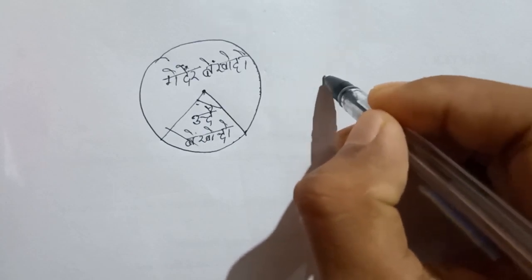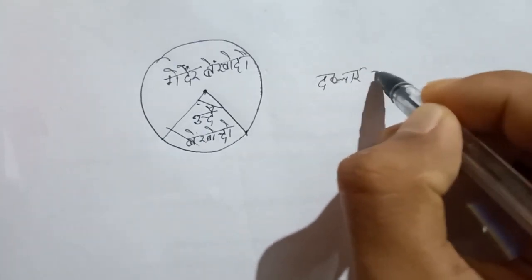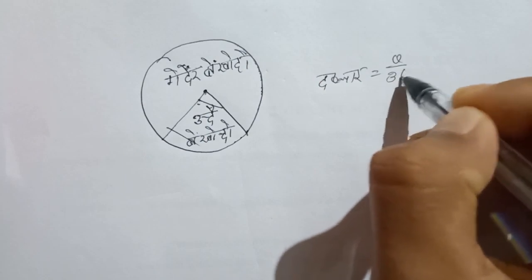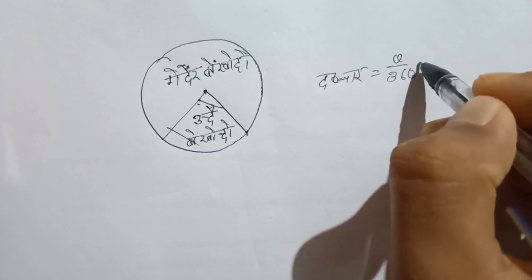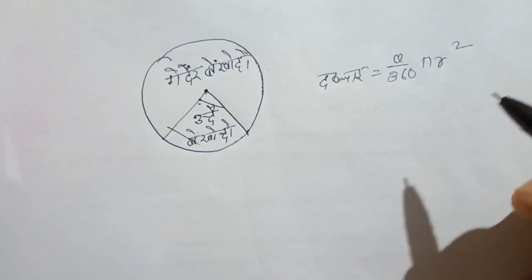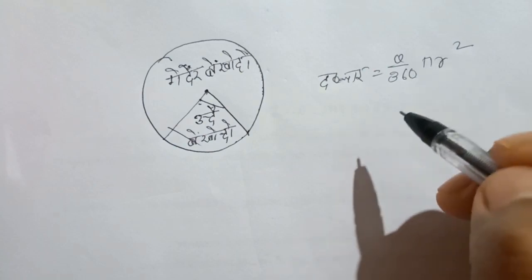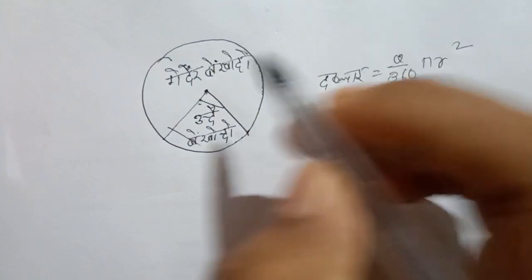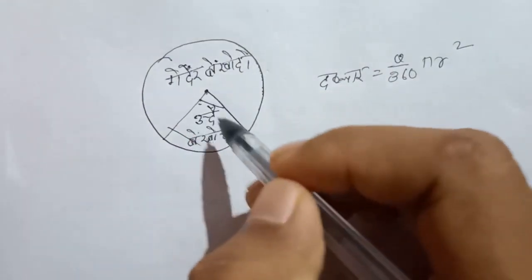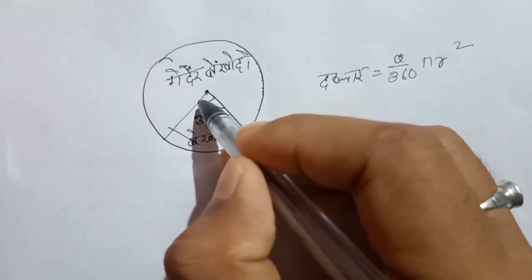This is the formula: 2T equal to theta by 360, pi r square. The theta by 360 pi r square is the rule of theta.